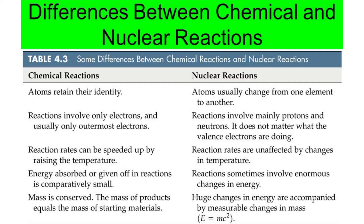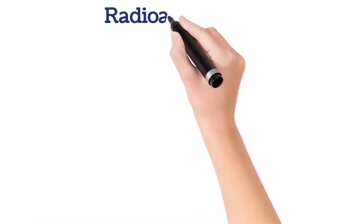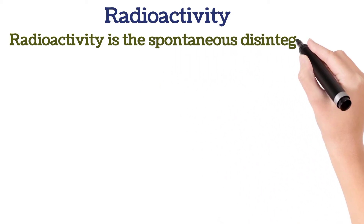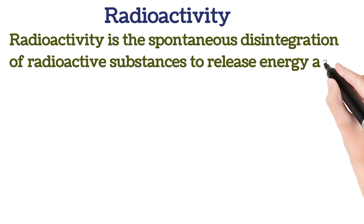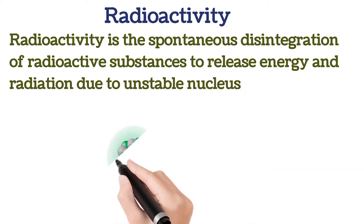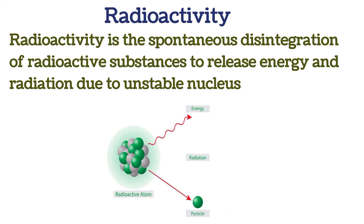In a chemical reaction you can increase or decrease the speed of the reaction by increasing or decreasing the temperature, or by increasing the concentration of any of the reactant or product species. Now, the next key topic is radioactivity. Radioactivity is the spontaneous disintegration of radioactive substances to release energy and radiation due to an unstable nucleus. When we say spontaneous disintegration, it means self-breaking down of radioactive substances with the emission of radiation.